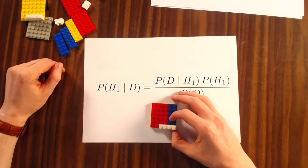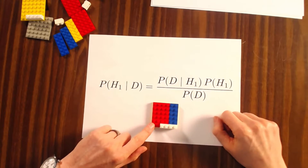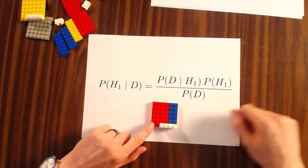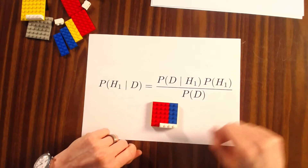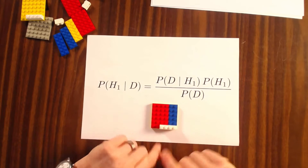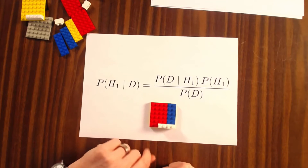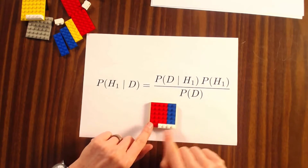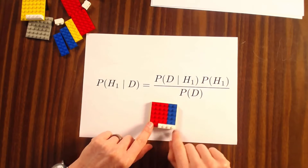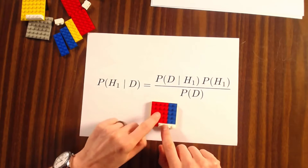In terms of Lego, imagine that this white brick is the data we found, the red brick is a hypothesis, and the blue brick is another hypothesis. Then we actually want to know the probability of the red hypothesis when we have found the white data. In other words, if you randomly select a white peg, what is the probability that there is a red space underneath?